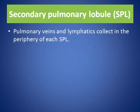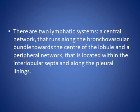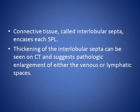Pulmonary veins and lymphatics collect in the periphery of each secondary pulmonary lobule. There are two lymphatic systems: a central network that runs along the bronchovascular bundle toward the center of the lobule, and a peripheral network located within the interlobular septa and along the pleural lining. Connective tissue called interlobular septa encases each secondary pulmonary lobule. Thickening of interlobular septa can be seen on CT scan and suggests pathologic enlargement of either venous or lymphatic spaces.